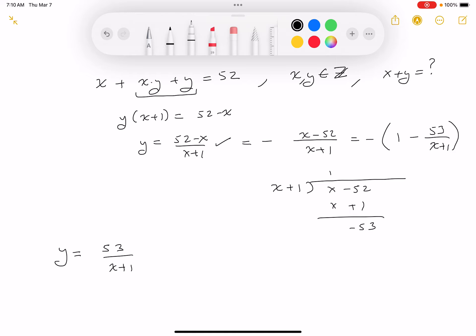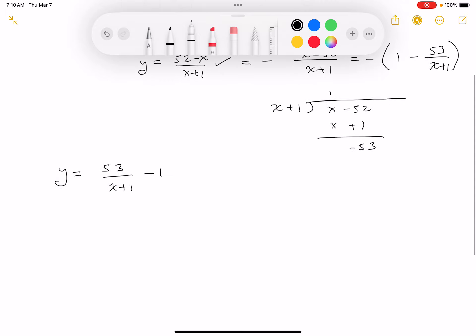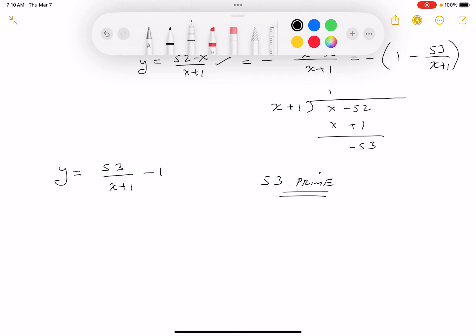Now what's nice about 53 is that 53 is a prime number, which means I'm just looking at this number and I want to make sure it divides through. So one thing I could do is say x equals 0.